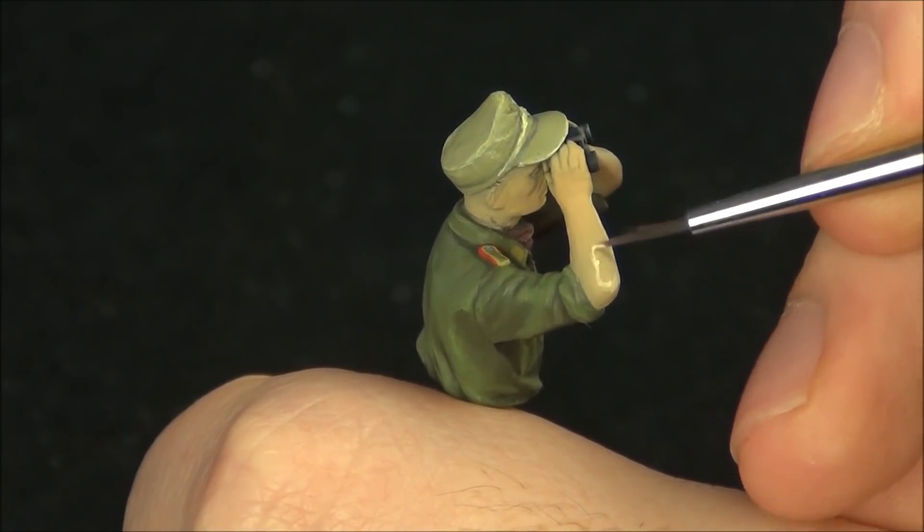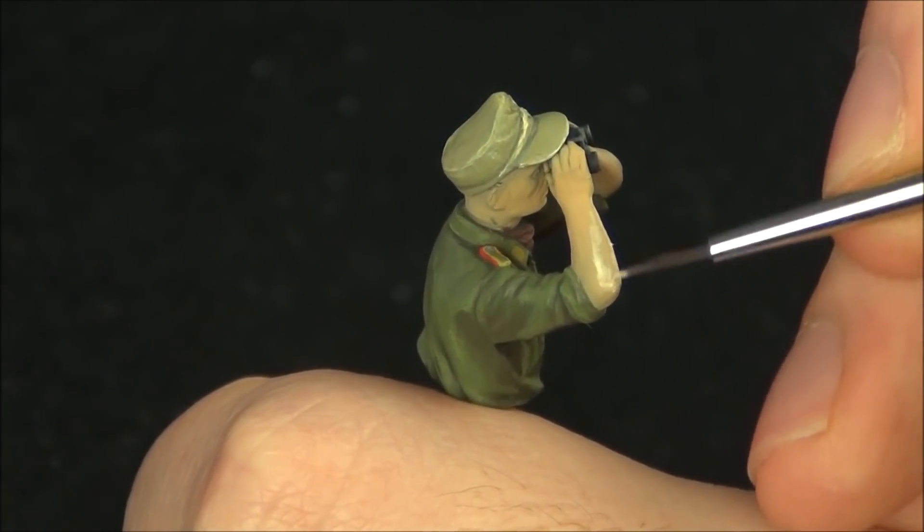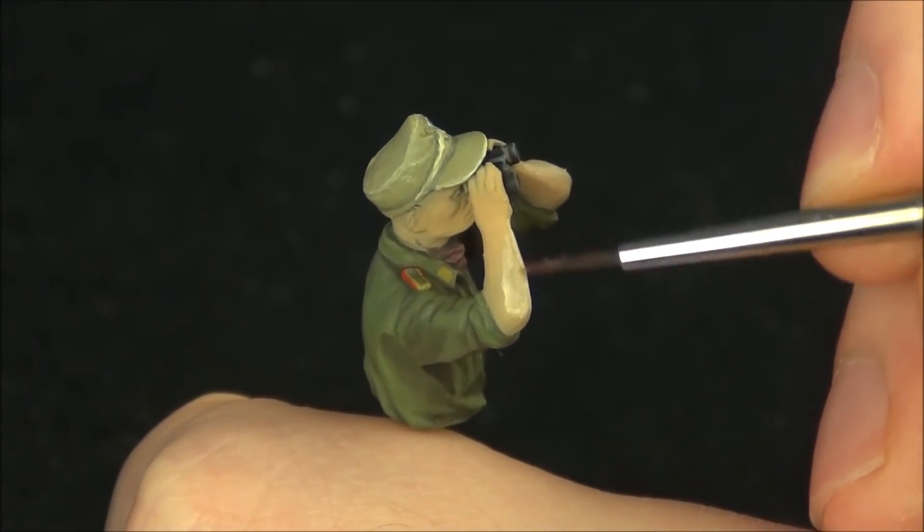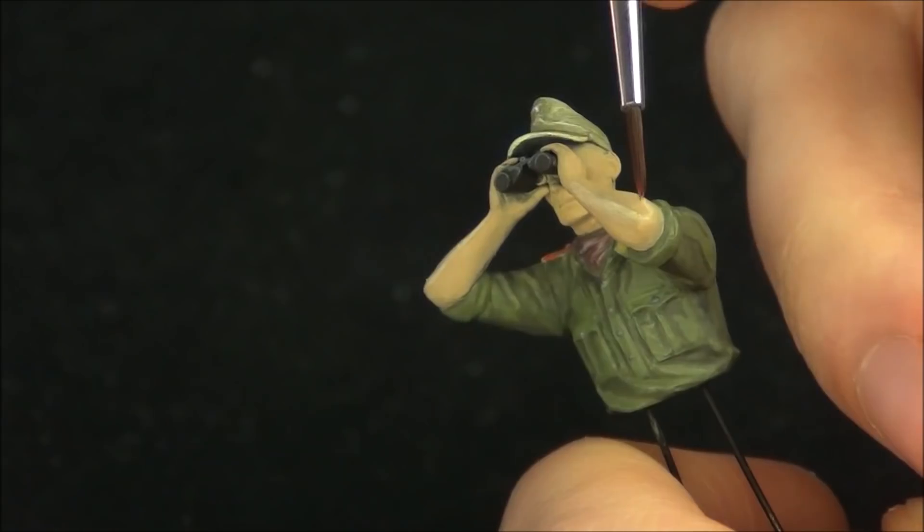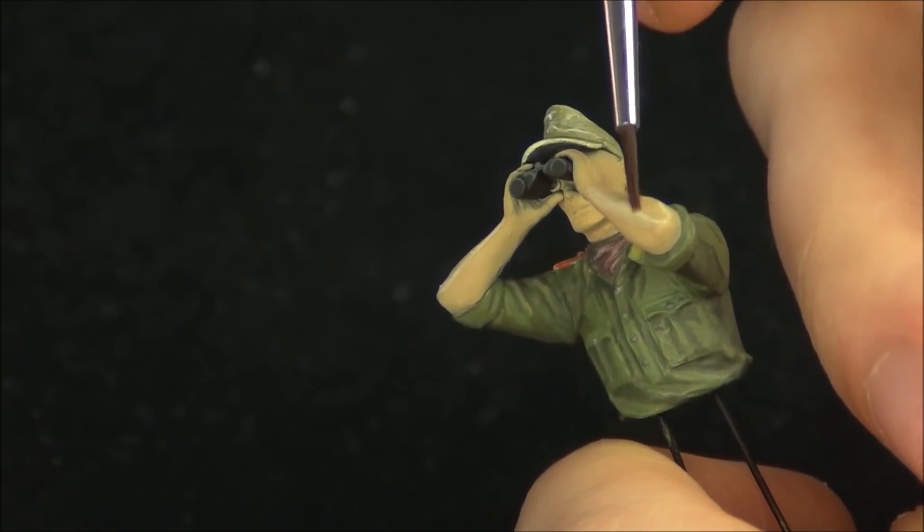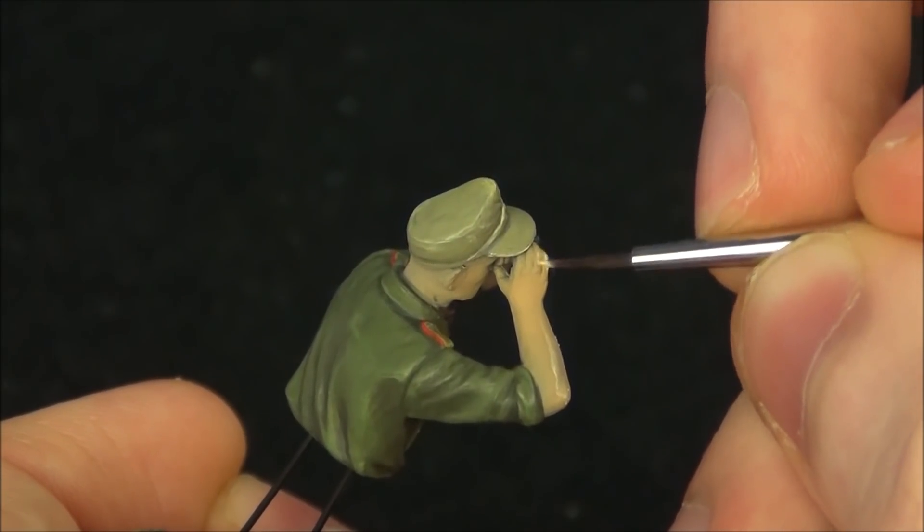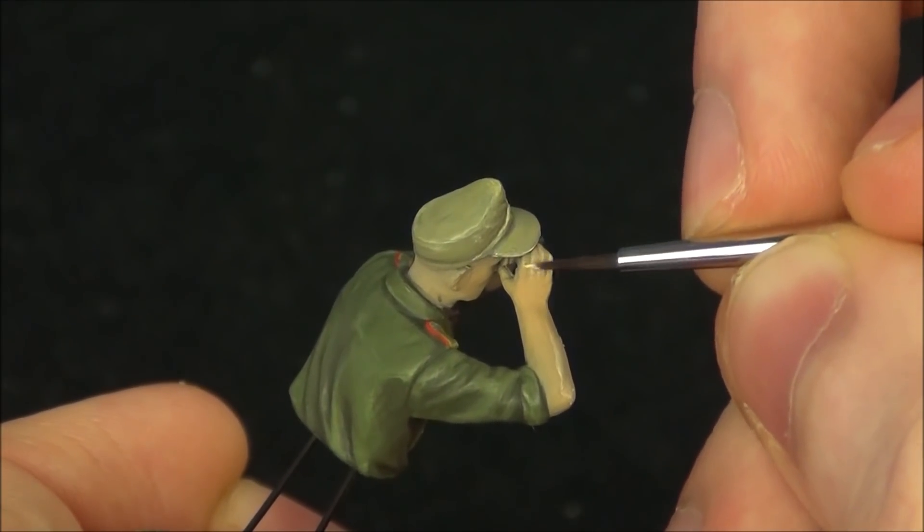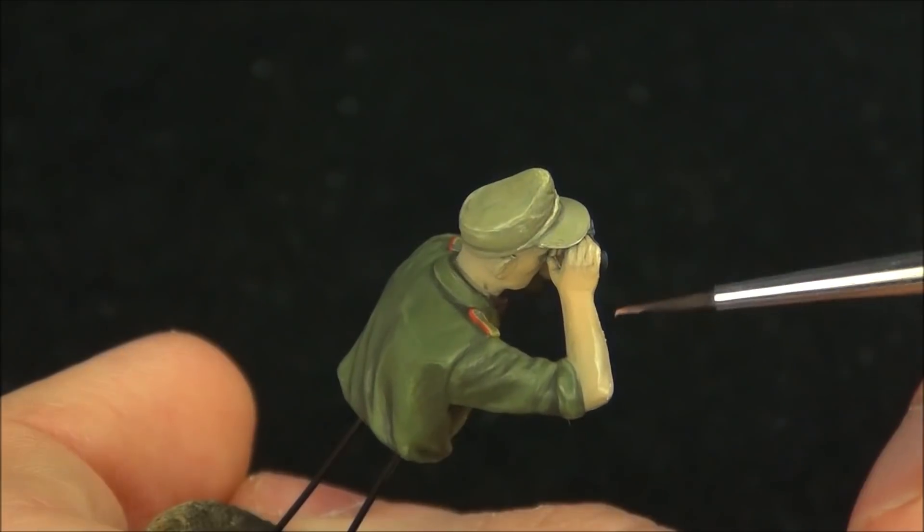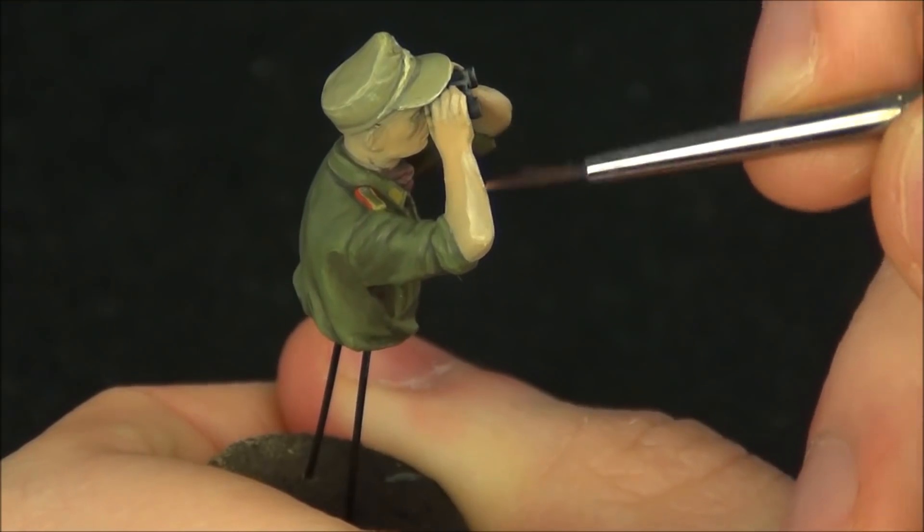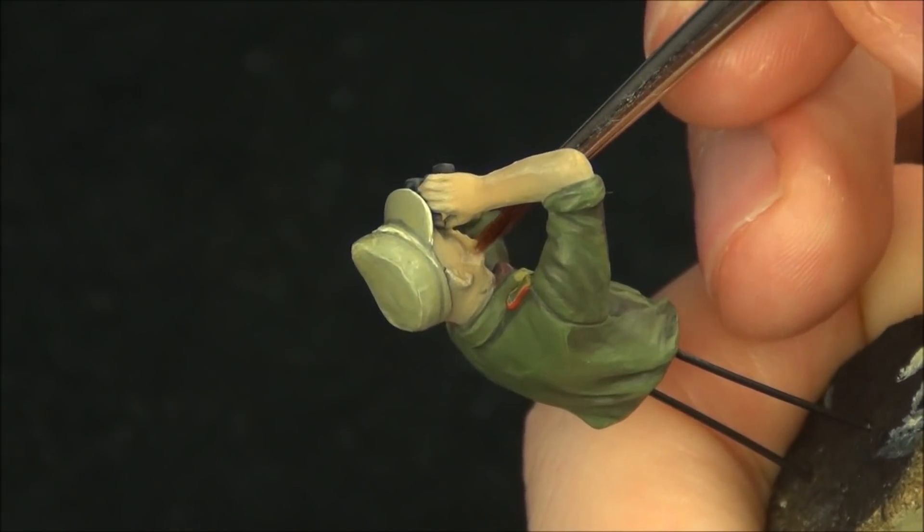And I used oil paints on the flesh because the fabric has much more sharp areas of highlight and shadow because there's folds. But of course the skin is much more soft. There aren't really any sharp details especially on the arms. So I'm using oil paints because they're much easier to blend and get softer transitions between highlight and shadow.